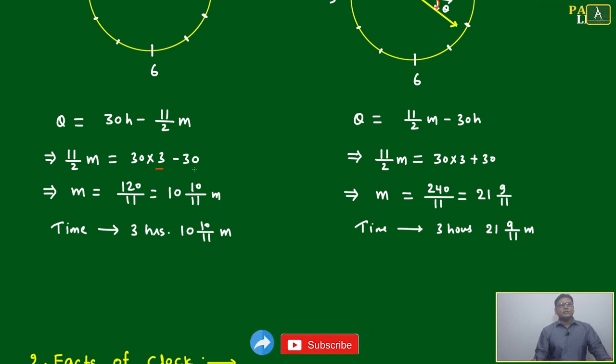You will get 3 hours 10 into 10 by 11 minutes.